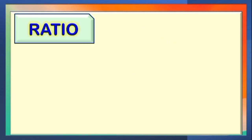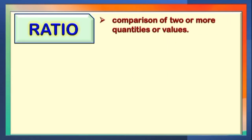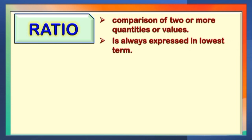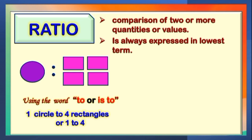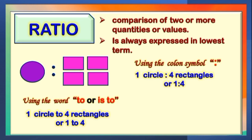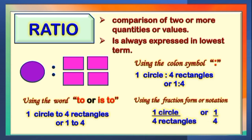The last term is what we call Ratio. It is the comparison of two or more quantities or values, and it is also expressed in lowest term. There are three ways to write the ratio. The first is using the word 'to' or 'is to.' The second is using the colon symbol. And lastly, using the fraction form or notation.